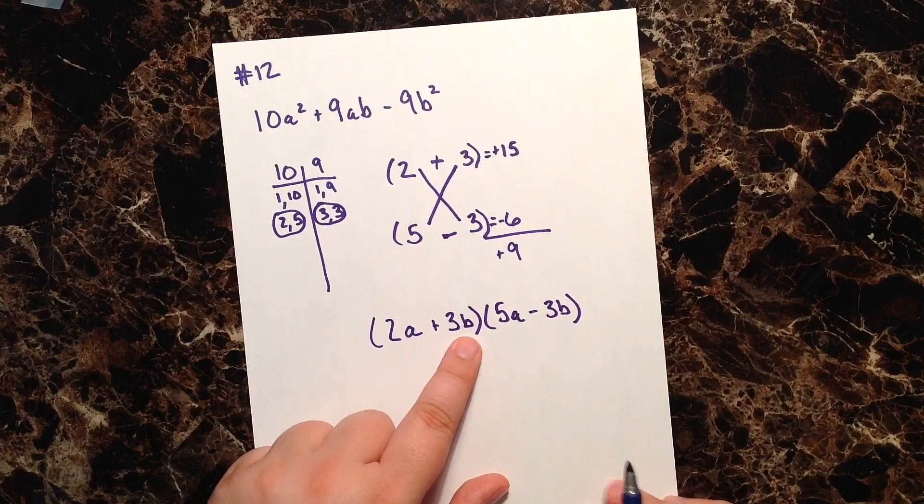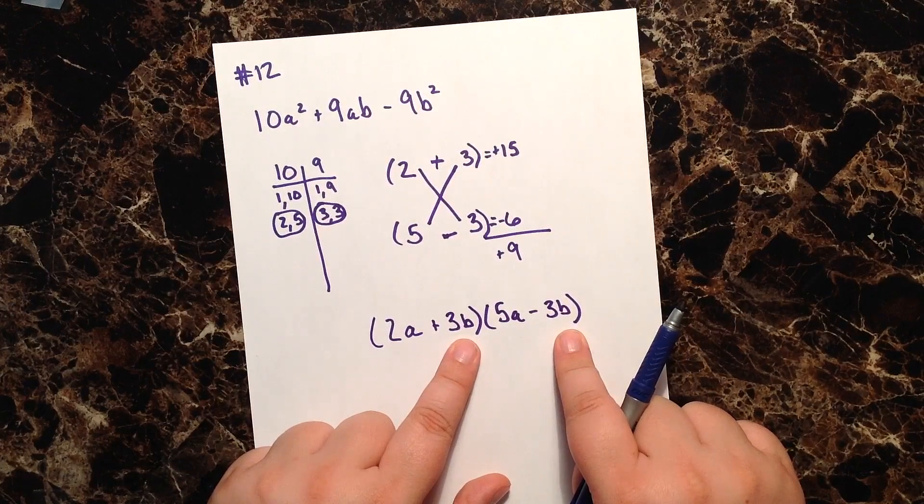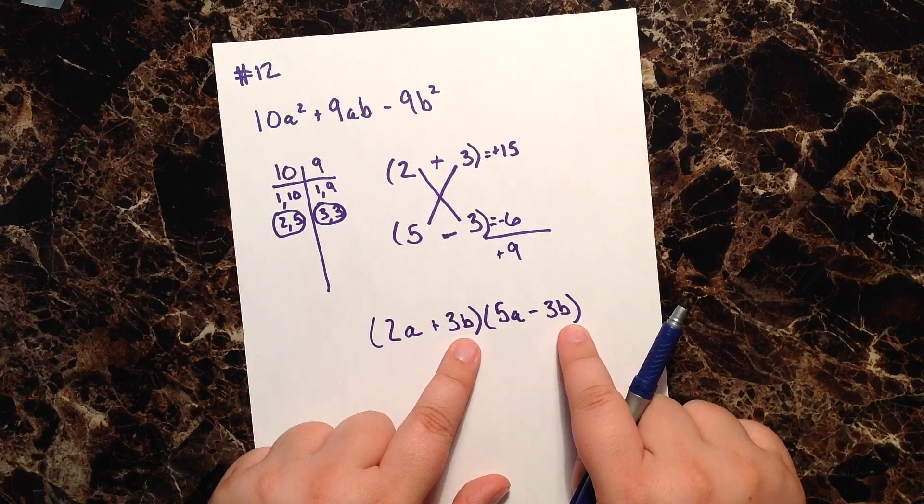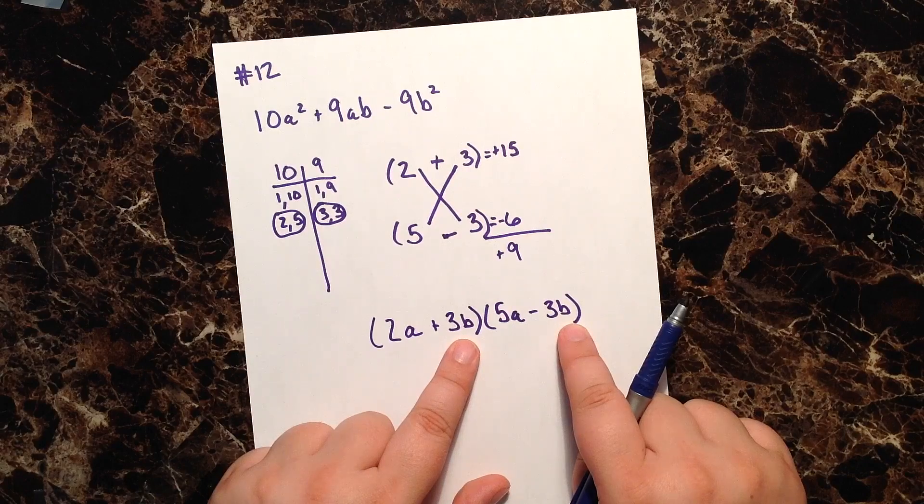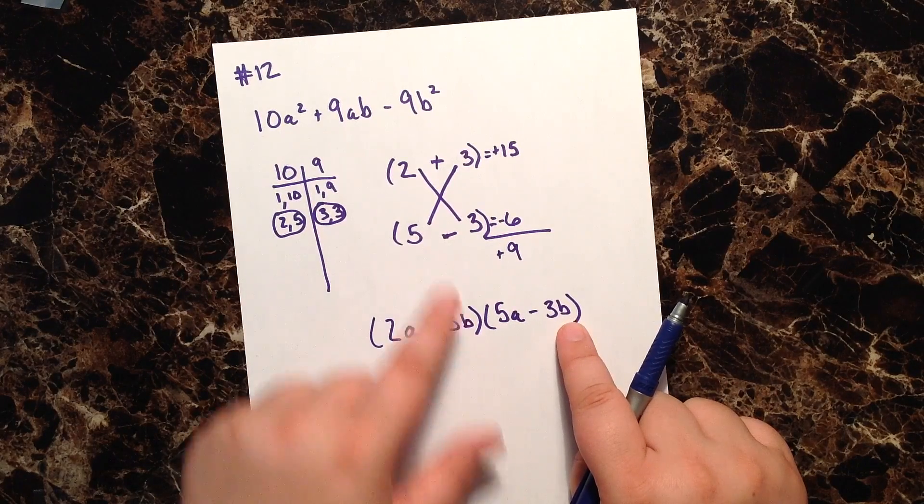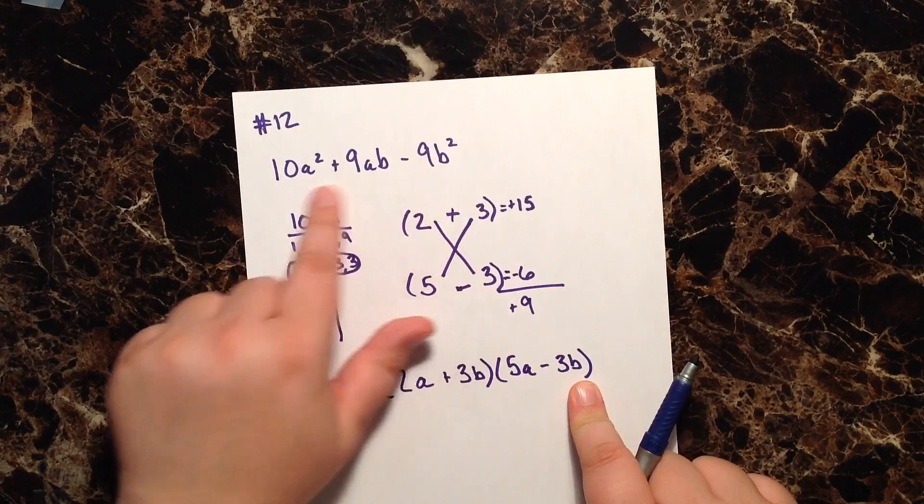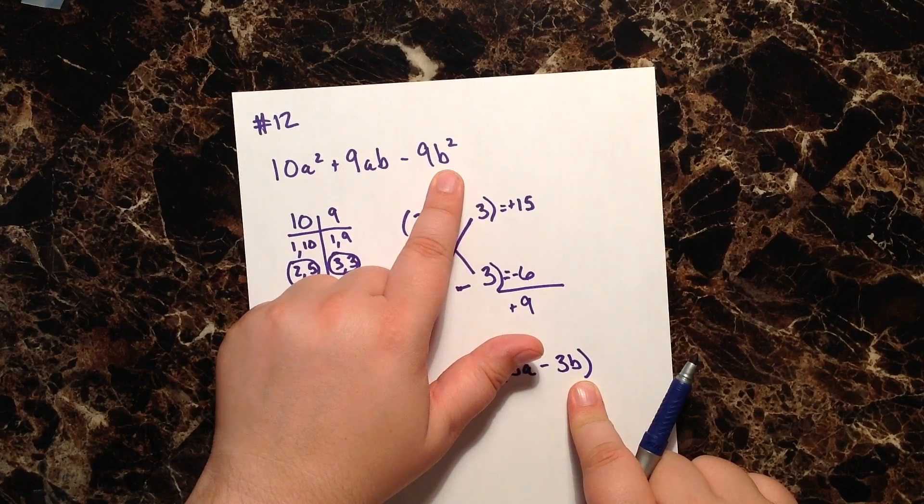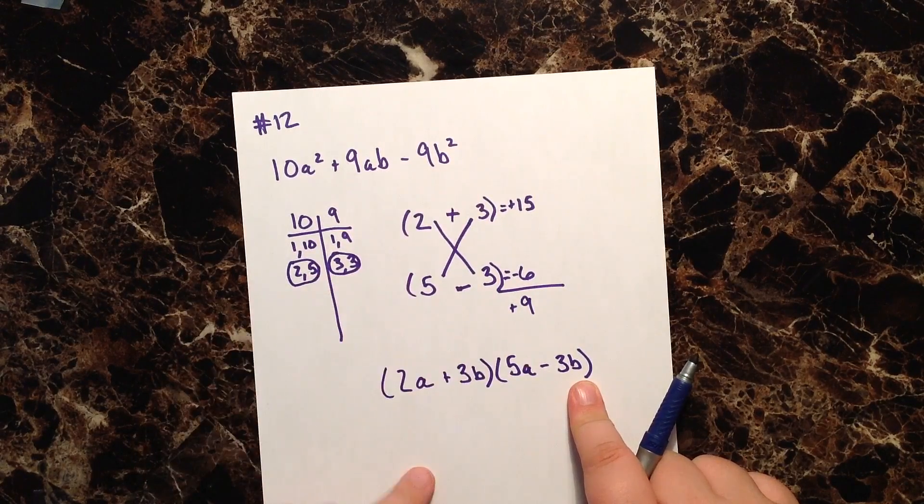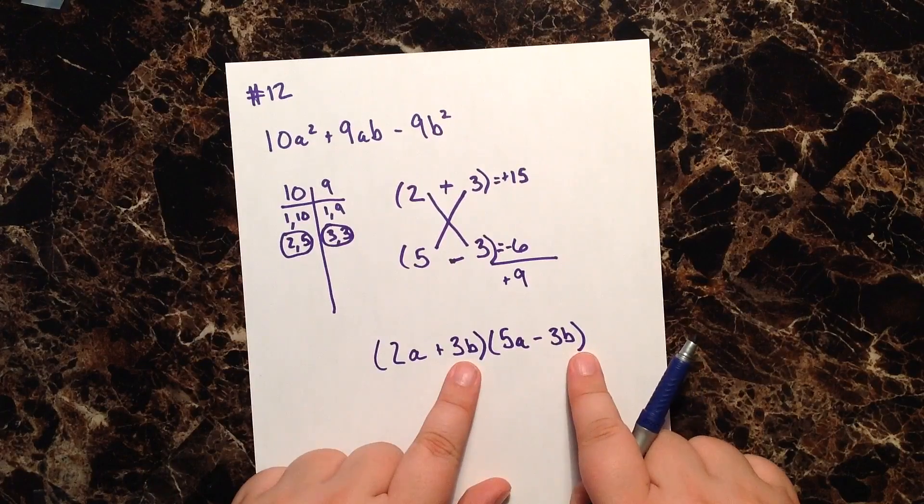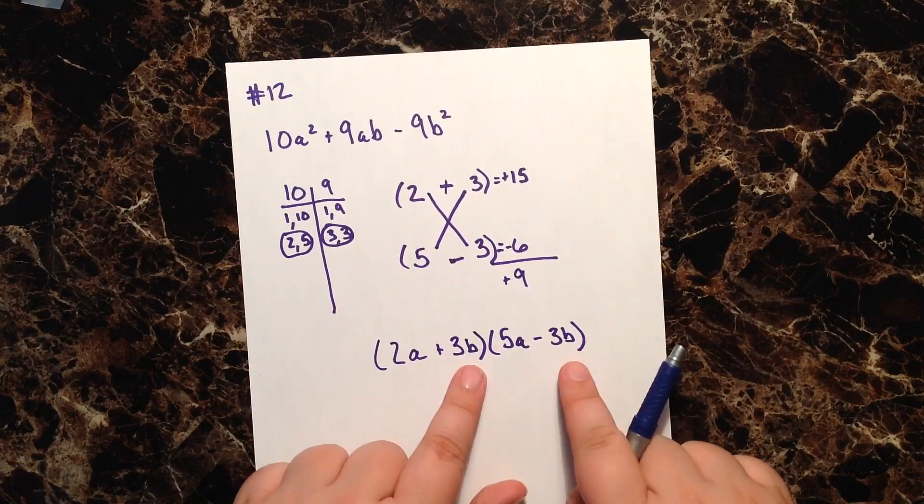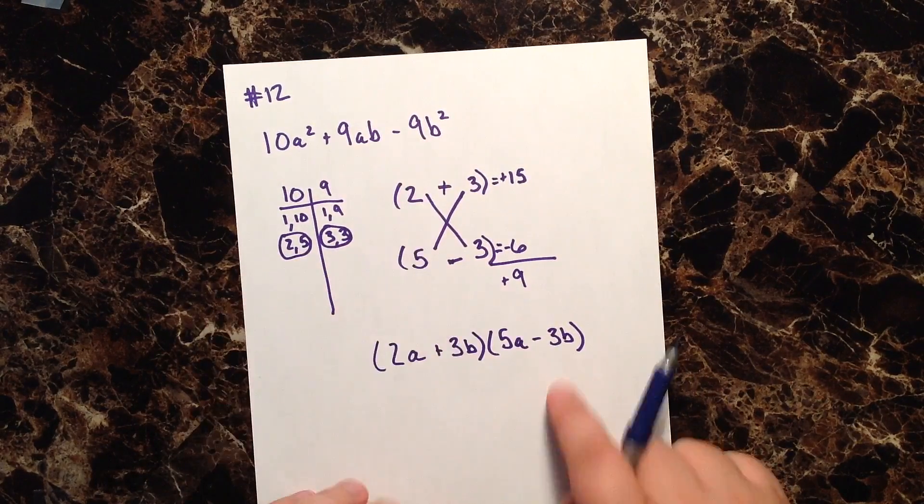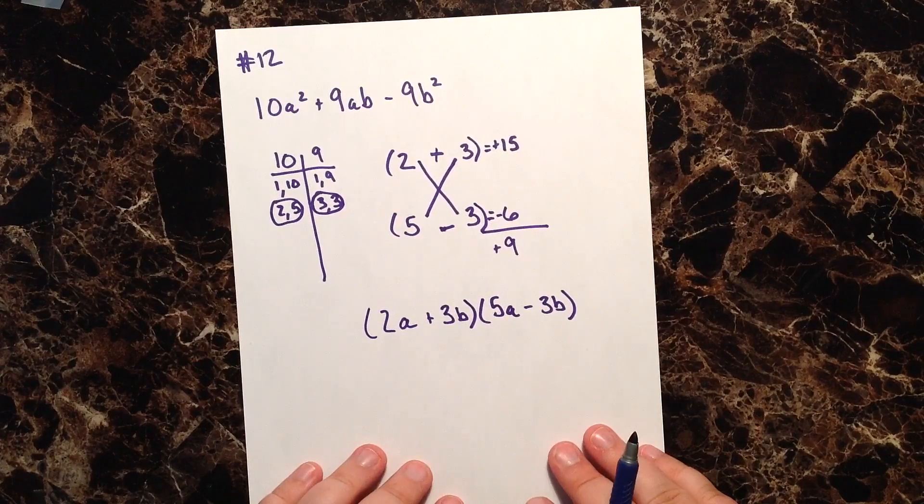Now, the reason that we have, sometimes we're not always using variables in the last part of our factors, but the reason we are here is because if we look in our original trinomial, there is a variable in the last term. And so when there's a variable in the last term, we know that the last term in each of my factors is also going to have whatever variable was in the original.